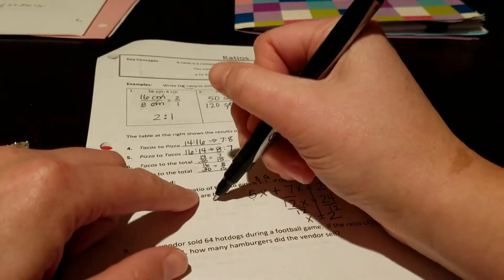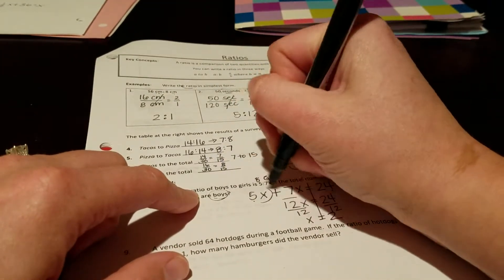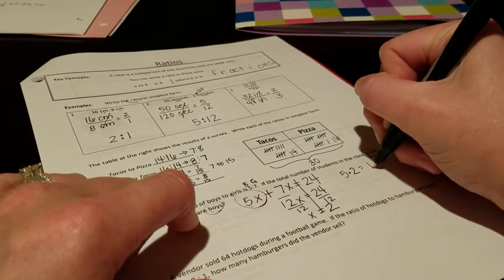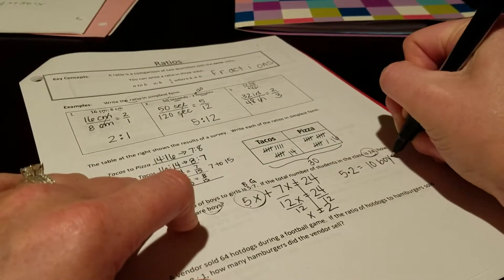So what that tells me is if I want to know how many boys. Boys was represented by 5x. So 5 times 2. There were 10 boys in the class.